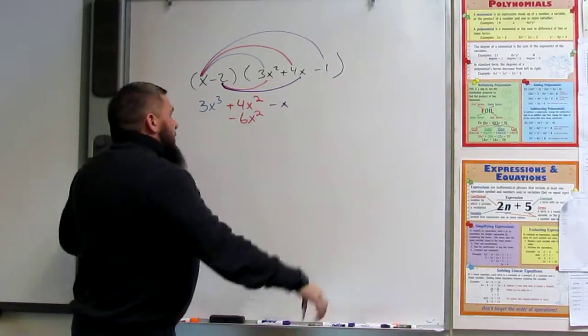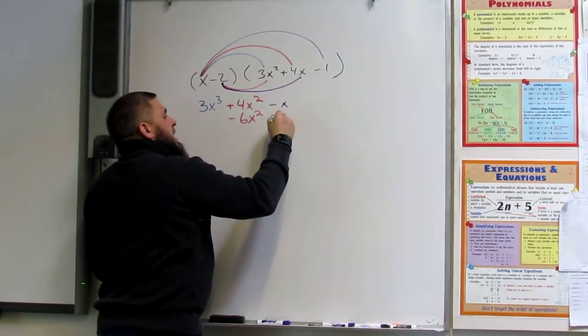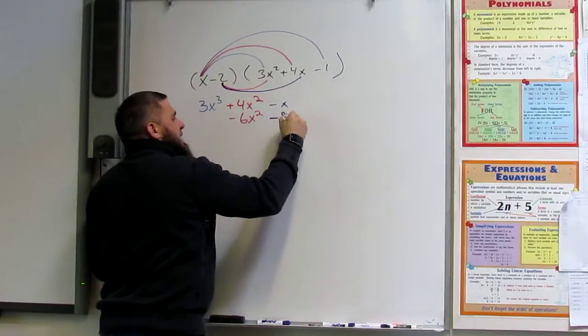So negative 2 times 4x. Negative 8x. Negative 8x.